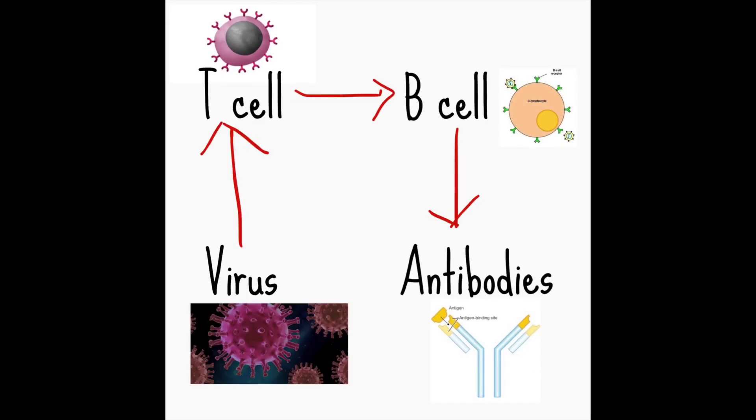For the T cell to get triggered, a virus has to trigger it. T cells can be of two types — helper T and cytotoxic T — but let's just remember that T cells stimulate B cells to produce antibodies. When a virus enters our body, cells like macrophages eat up the virus and present it to the T cell, which then tells the B cell to produce antibodies and kill the virus. Most of our attention so far had been on the antibodies — how they're produced and how much — but recently attention has shifted to the T cells.